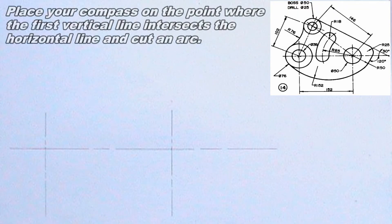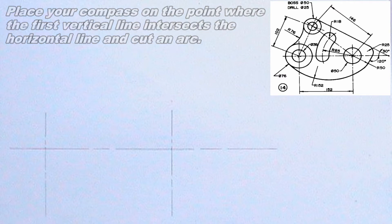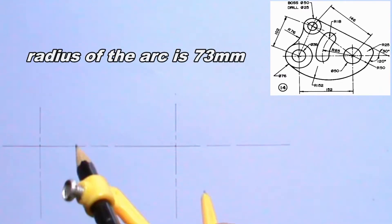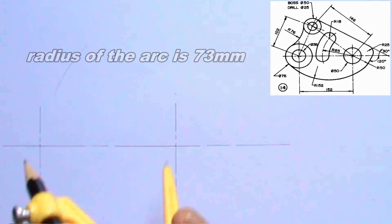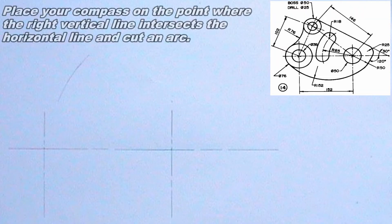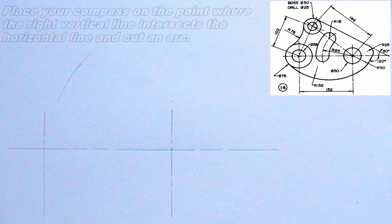Next, I will place my compass at the point where the first vertical line intersects the horizontal line, then I will cut an arc. The radius of the arc should be 73mm. I will also place my compass on the point where the right vertical line intersects the horizontal line, then I will cut an arc. The radius of that arc should be 51mm, and the arc should intersect the previous one.